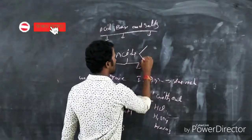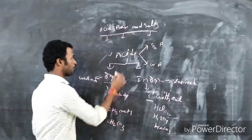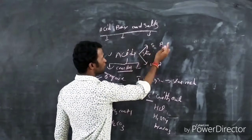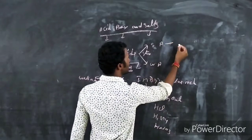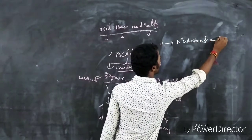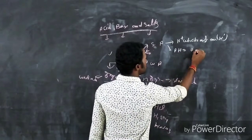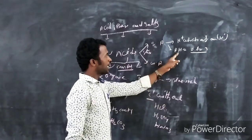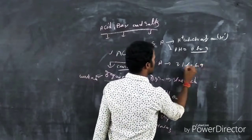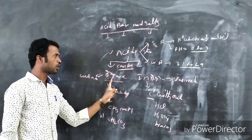Based on strength, acids are classified into two types: strong acids and weak acids. Strong acids have a pH value of 0 to 3. Weak acids have a pH value ranging from 3.12 to 6.9. So acids are classified two ways: by compound nature into organic and inorganic, and by strength into strong and weak.